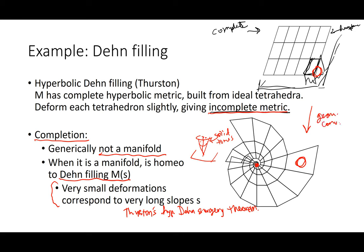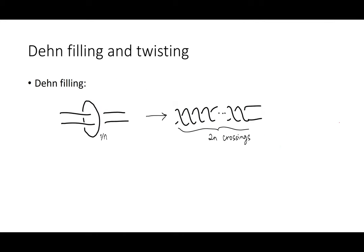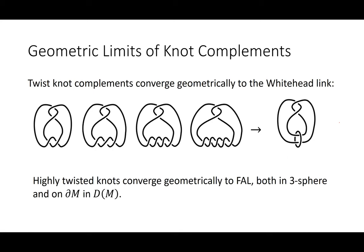Using this geometric picture, you can say all sorts of things about topological phenomena on knots. A 1/n Dehn filling puts in 2n crossings, implying geometric limits of knot complements. A very cool result: twist knot complements converge geometrically to the Whitehead link — putting in more and more crossings into a twist region, in the limit a new cusp develops. More generally, the highly twisted knots from talk one converge geometrically to a fully augmented link — both in the three-sphere and on the boundary of the double from talk two.